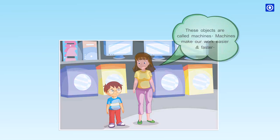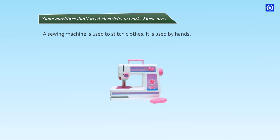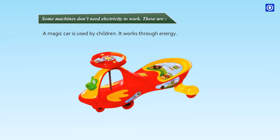Some machines don't need electricity to work. A cycle is a machine and functions by foot pedals. A sewing machine is used to stitch clothes and is operated by hands. A magic car is used by children and works through energy.